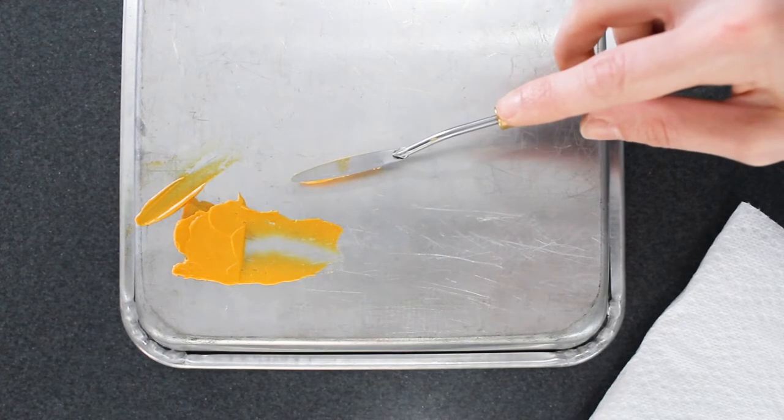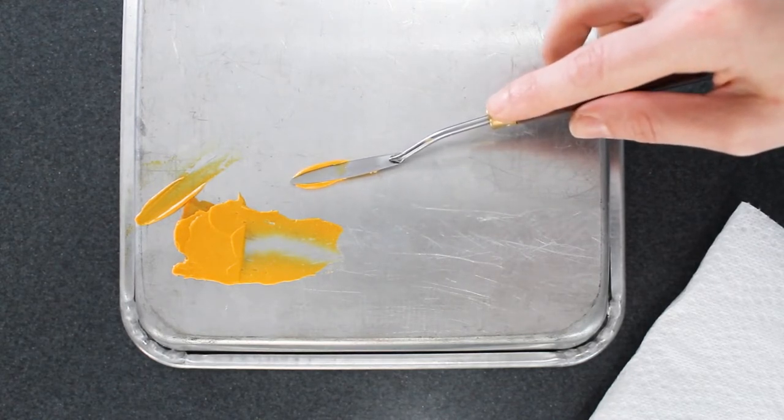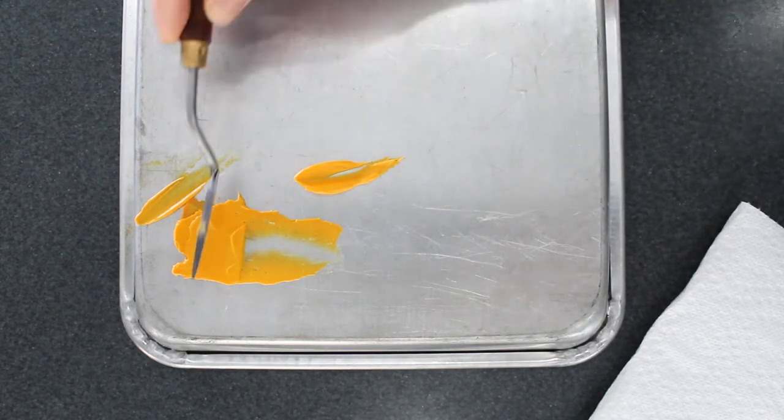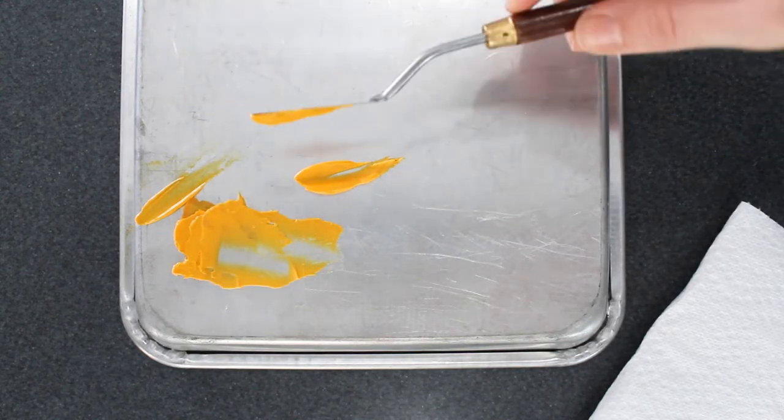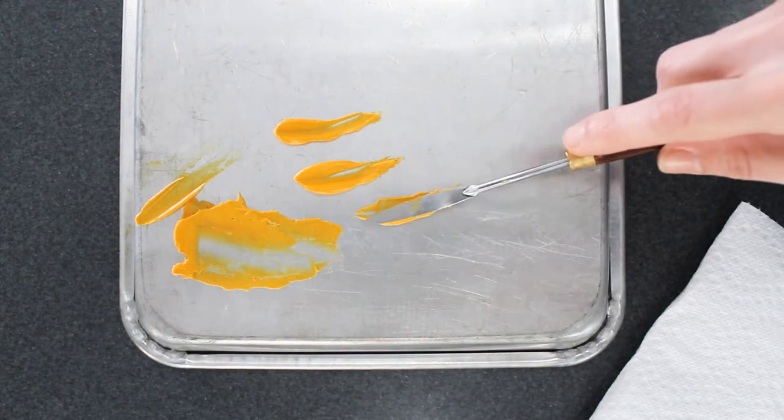Then to make a petal, push this buttercream down as you pull away from the point of the palette knife. If you move it to one side as you pull away, you can see it makes the petal a bit wider. Again, this isn't the only way to do it. I just like the way my petals turn out when I use this technique.